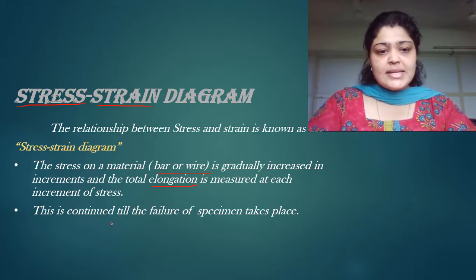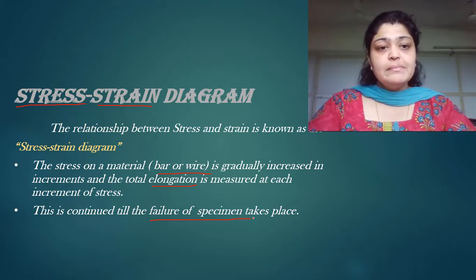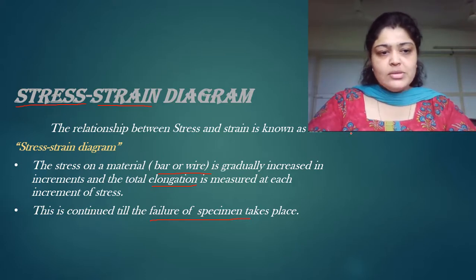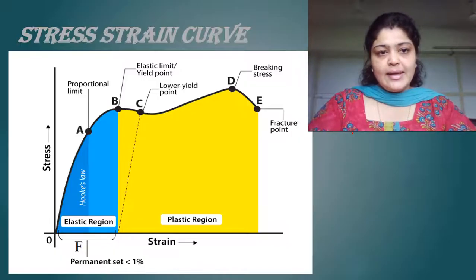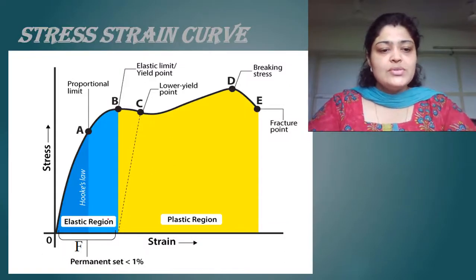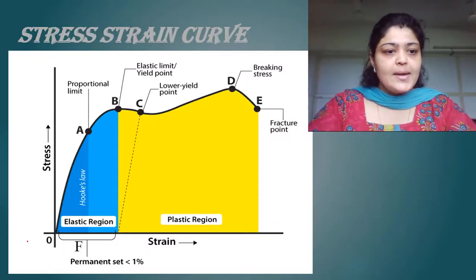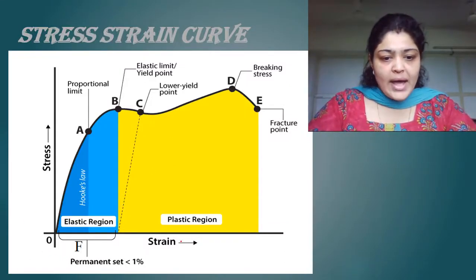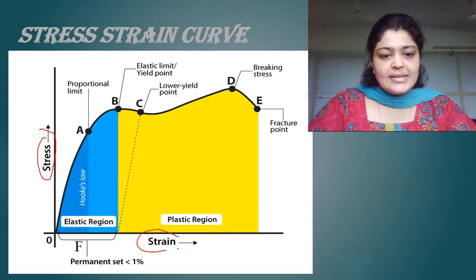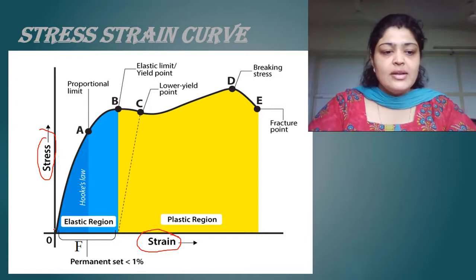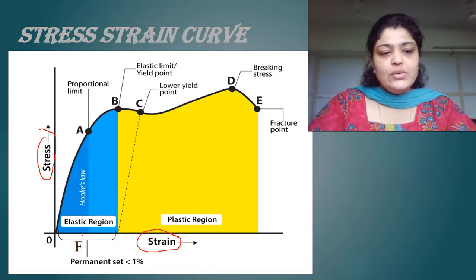This increment is continued till the failure of the specimen takes place, till the complete specimen is deformed. So let us move on to the stress-strain diagram. On the y-axis we plot stress, on the x-axis we plot strain. We increase one unit of stress and one unit of strain is increased according to the stress.